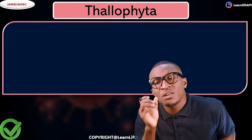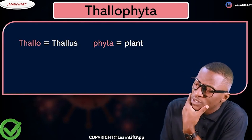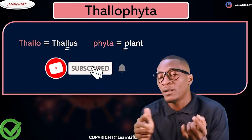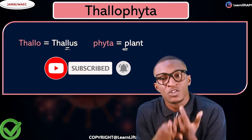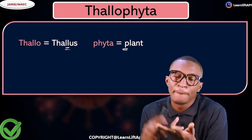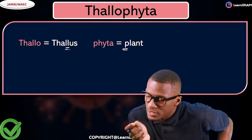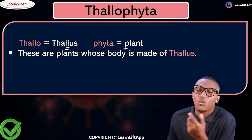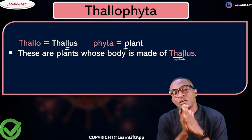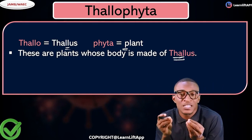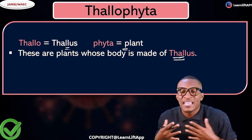What is a thallophyte? The word thallophyte comes from two words: thallus and phyta. Thallus means thallus, and phyta refers to plant — the study of plants is also called phyta. That's why we have Schizophyta, Thallophyta, Bryophyta, Pteridophyta, Spermatophyta. So thallophytes are plants whose body is made up of a thallus.